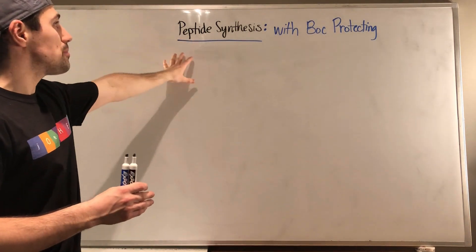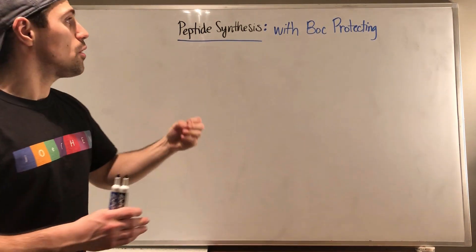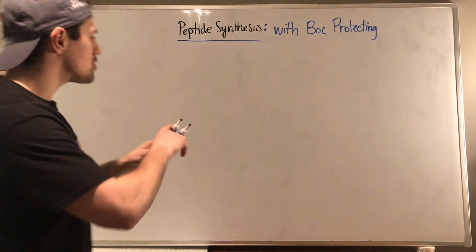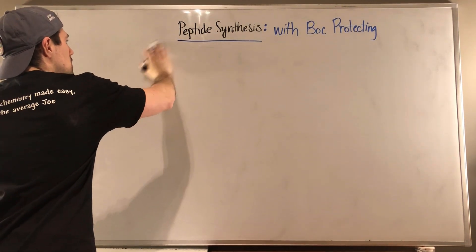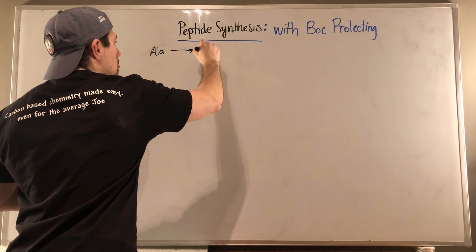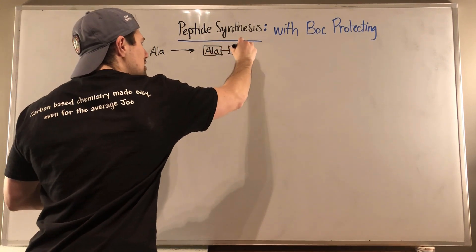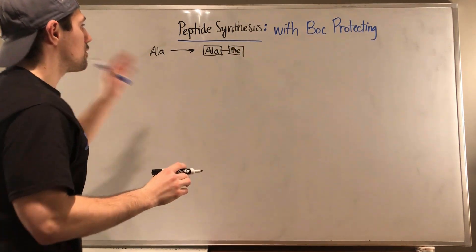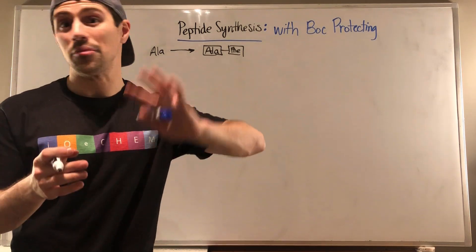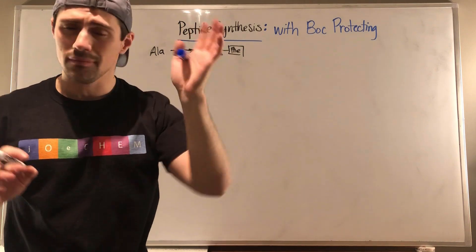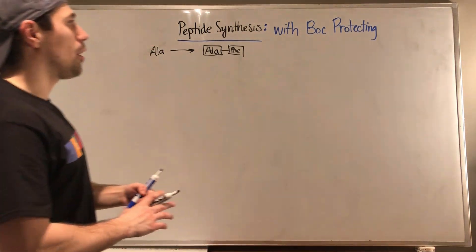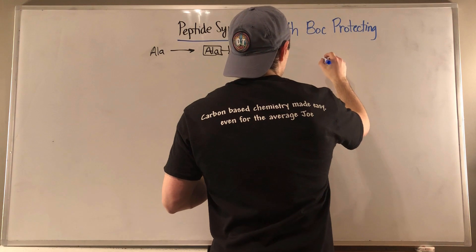This peptide synthesis process is very common. We'll be using what's called the Boc protecting group, so strap in, we're gonna have some fun. We're gonna keep it simple — I want to show you how we can take alanine and make alanine-phenylalanine. The R groups here are pretty simple, there's not much going on reactivity-wise, though sometimes you'd even have to protect things on the R side chain.